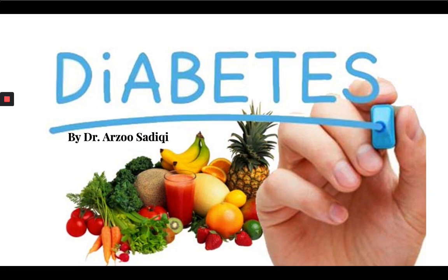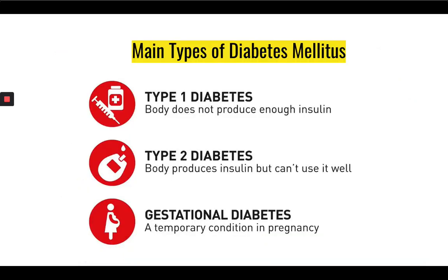Hello everyone, Dr. Siddiqui here. Today we're going to be talking about diabetes. Diabetes is a word derived from the Greek word that means siphon or pass-through, whereas mellitus is a Latin word that means honey or sweet. This is because in diabetes there's excess sugar found in the blood as well as the urine.